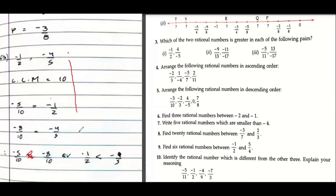Now I'll give you a shortcut. Just do cross multiplication. 5 times -1 is -5, and 2 times -4 is -10. Which one is greater? -5. Therefore, -1/2 is greater. Isn't it a shortcut?